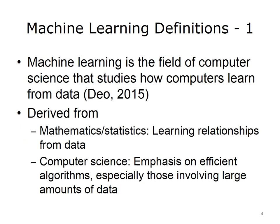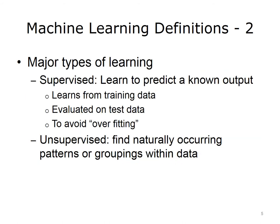There are many definitions of machine learning, but it's commonly described as the field of computer science that studies how computers learn from data. Machine learning is derived from mathematics and statistics, where relationships are learned from data, and from computer science, where there is emphasis on efficient algorithms, especially those involving large amounts of data. Often when we talk about machine learning, we talk about different types of learning.